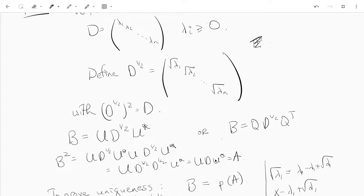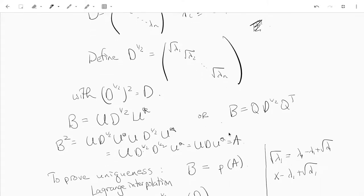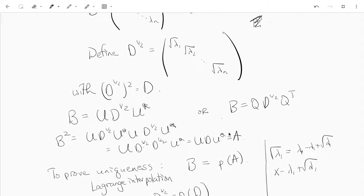So B squared equals A. Proving that B is unique is more involved, but I wanted to tell you some of the ingredients, though it's kind of things we haven't really looked at too much.